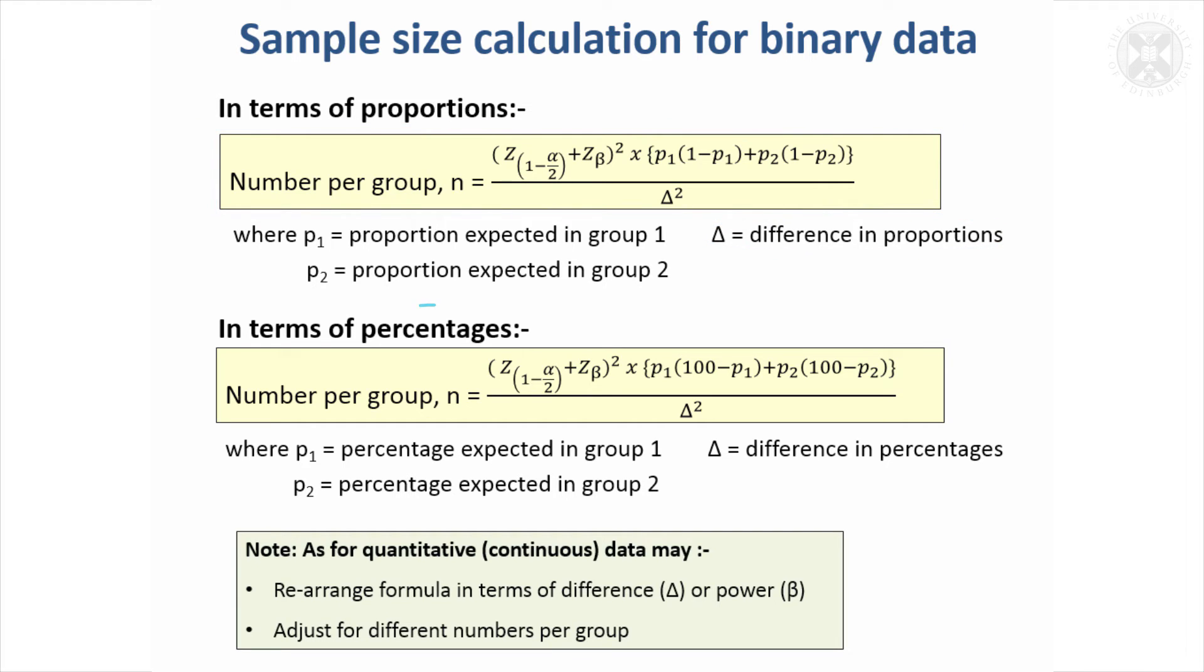Sometimes it's easier to do it in terms of percentages, and it's very easy to adapt for that. Instead of the 1 coming in here, we have 100, and these p's are in terms of percentages, and so is delta.